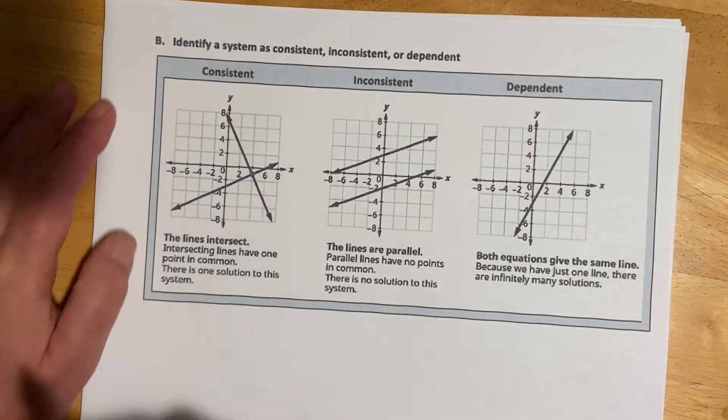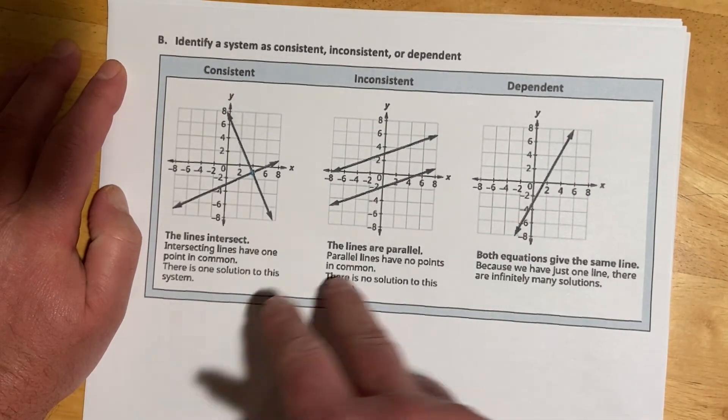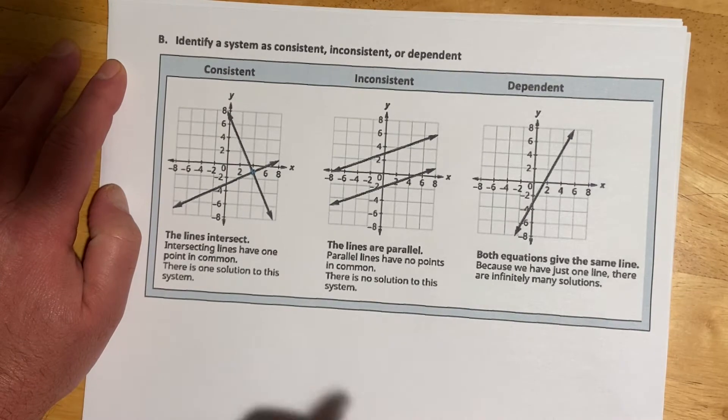So for graphing, first, three methods. And for all the systems, there's going to be three possible outcomes, along with having three possible ways to solve it.